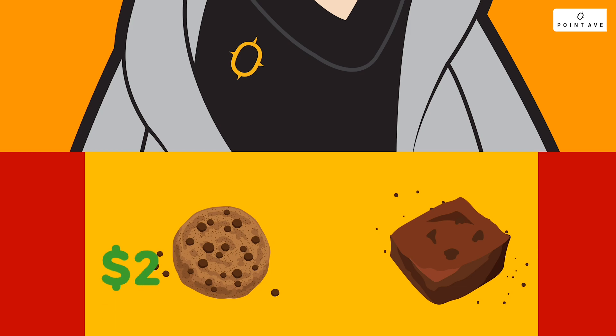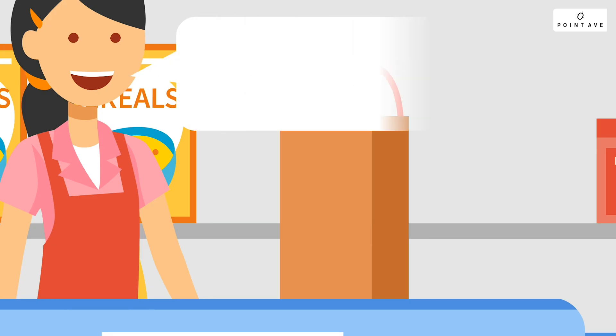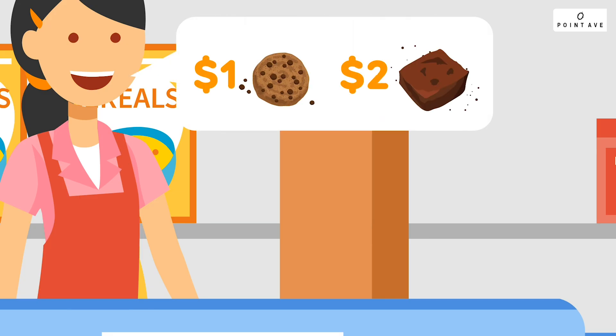You remember that the cookies sold for $2 and the brownies sold for $3, and that you paid $1 for every cookie and $2 for every brownie.